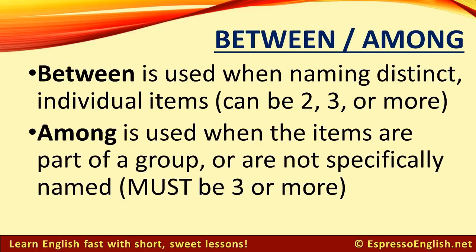Between is used when naming distinct individual items. It can be two items, three items, or more. And among is used when the items are part of a group or are not specifically named. And to use among, it must be three or more things.